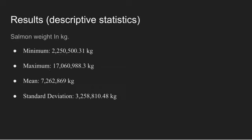The results for descriptive statistics over salmon weight in kilograms: minimum was 2,250,500.31 kilograms, maximum was 17,060,988.3 kilograms, the mean was 7,262,869 kilograms, and standard deviation was 3,258,810.48 kilograms.